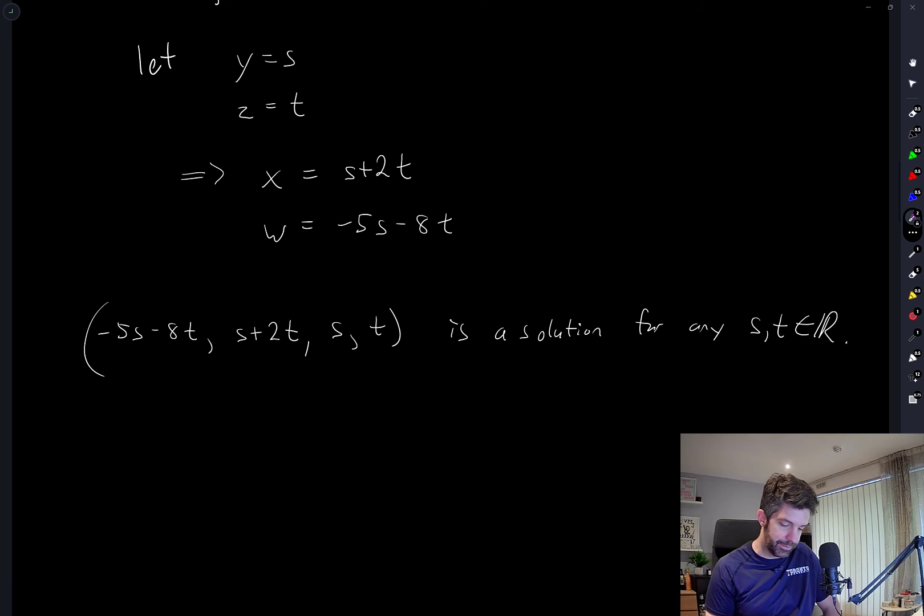And we can actually see from this structure here how this special vector negative 5, 1, 1, 0 comes out. If I let T be equal to 0, and S be equal to 1, remember I can let S and T be any real numbers.